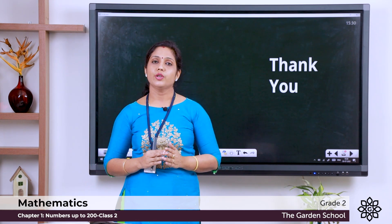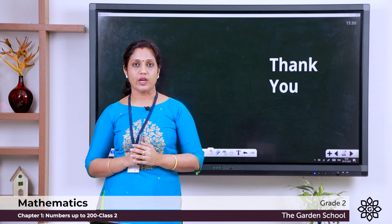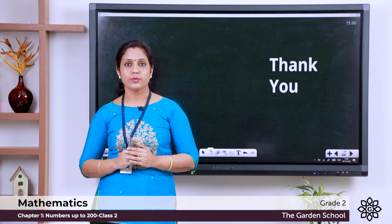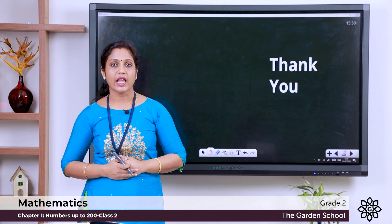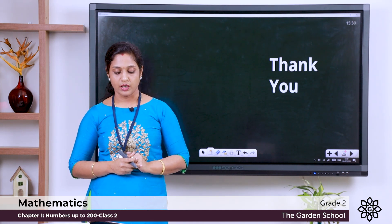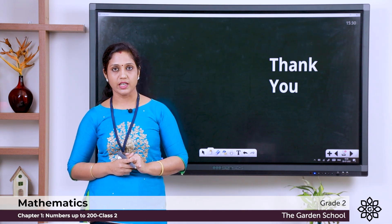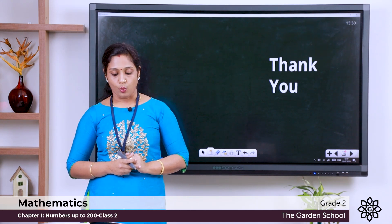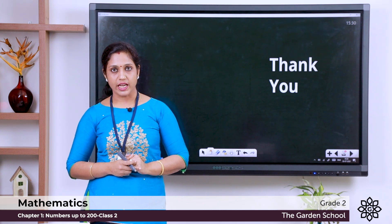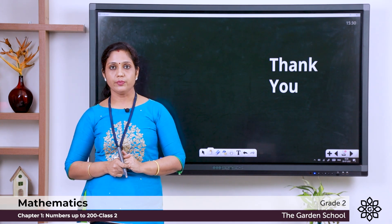Hope you understood what was taught today: expanded form, place value, and face value. Now open your textbook and move on to the exercises on page 8. Let us read the question: Write the expanded form of the following numbers — the first one has been done for you. For 149, the expanded form is 100 plus 4 tens plus 9 ones, equal to 100 plus 40 plus 9. Like this, you can do the rest of the exercises.